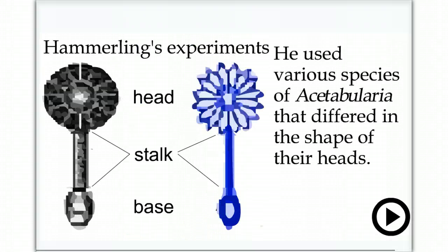There are various species of acetabularia that differ in the shape of their heads, and because of their large size, it's possible to perform various types of dissection and transplantation experiments between organisms.